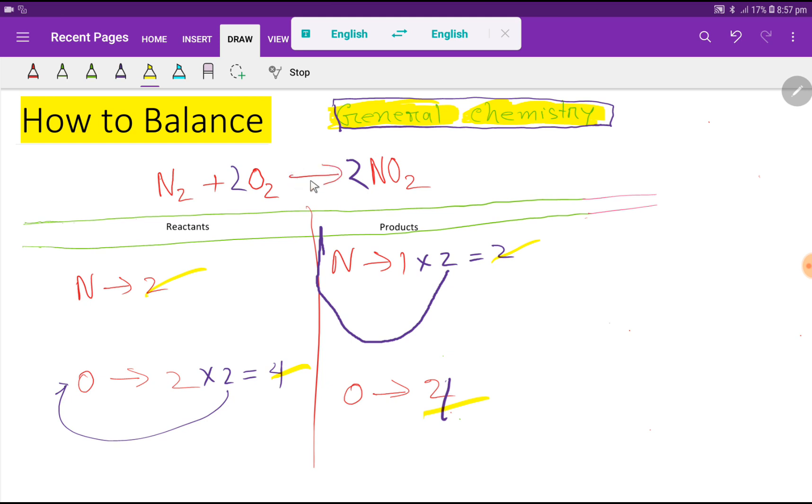At last you can change this arrow sign to an equal sign. So this is the balanced equation. Thank you for watching this video. Be well.